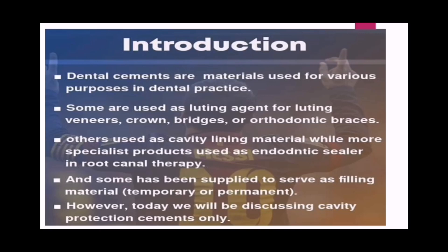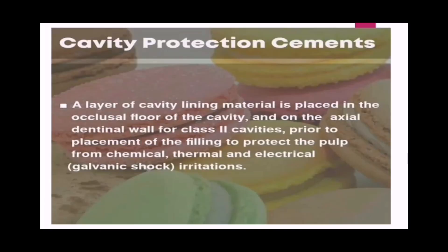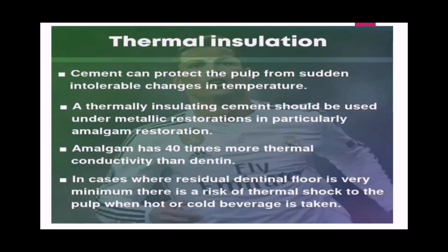Today we will discuss cavity protection cements only. A layer of cavity lining material is placed on the occlusal floor of the cavity and on the axial dentinal wall of the Class 2 cavity, prior to placement of filling material, to protect the pulp from chemical, thermal, electrical, and galvanic shock or irritation.